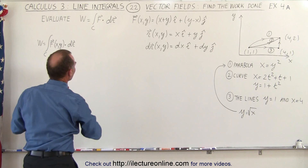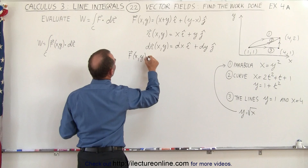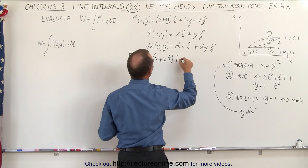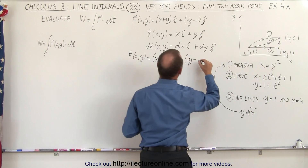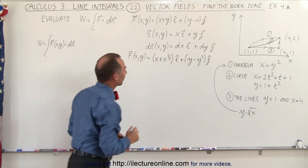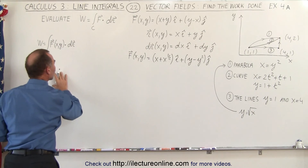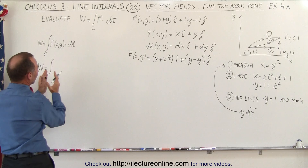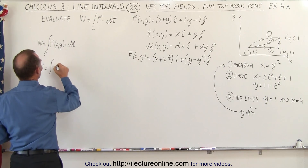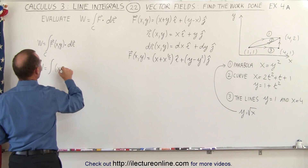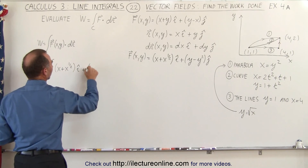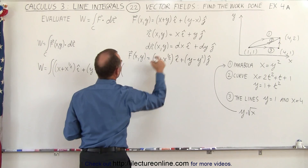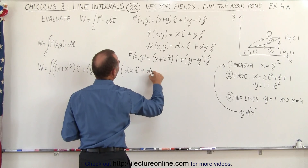Plugging the substitution in, the force vector becomes x plus x to the one-half power in the i direction, and y minus y squared in the j direction — replacing x with y squared in the second component. Expressing the vector field this way makes it much easier to integrate. We then dot this force vector with the derivative of the position vector, which is dx in the i direction plus dy in the j direction.